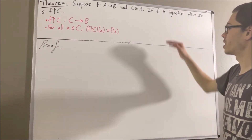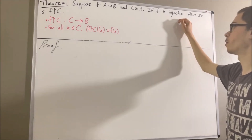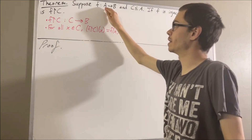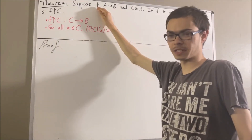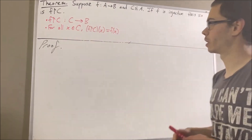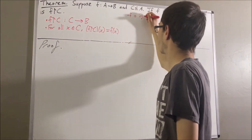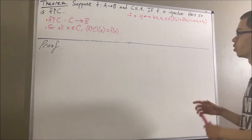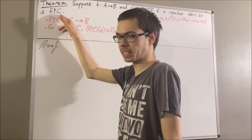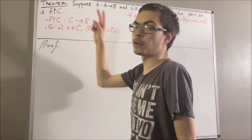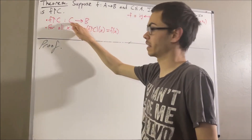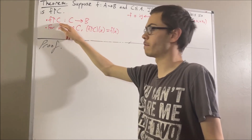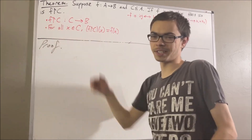Now what does it mean for f to be injective? Well, what that means is for every two elements x1 and x2 in A, if f(x1) equals f(x2), then x1 is equal to x2. Similarly, what does it mean for f restricted to C to be injective? It means that for every two elements x1 and x2 in C, if f restricted to C of x1 equals f restricted to C of x2, then x1 is equal to x2.